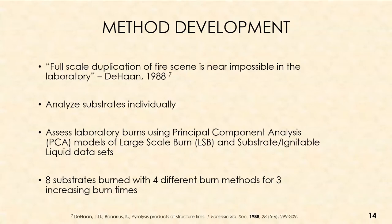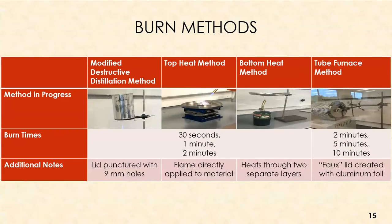For the modified destructive distillation method (MDDM), the burn occurs within a paint can container with a lid punctured with 9 mm holes — which allows you to see the smoke. This method allows for the most product to be retained within the container. Once the burn time is complete, a new unpunctured paint can lid is placed over the container, it is allowed to cool, and then it goes through extraction and analysis.